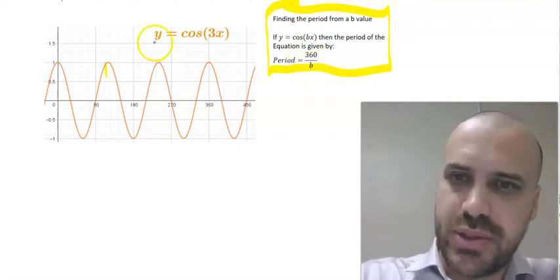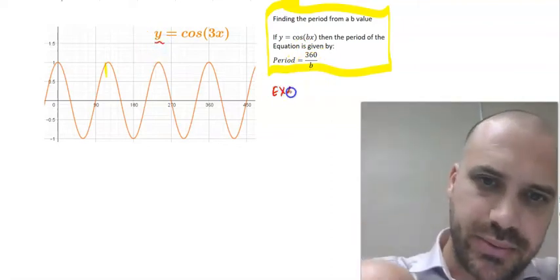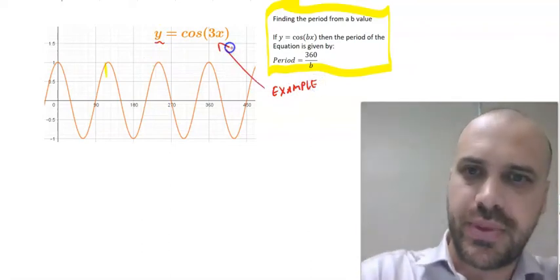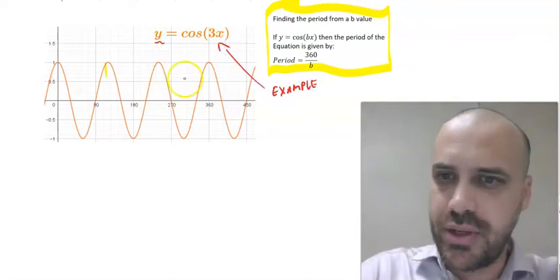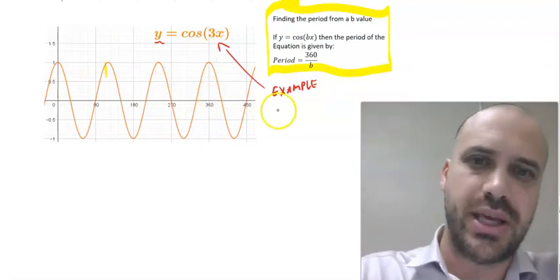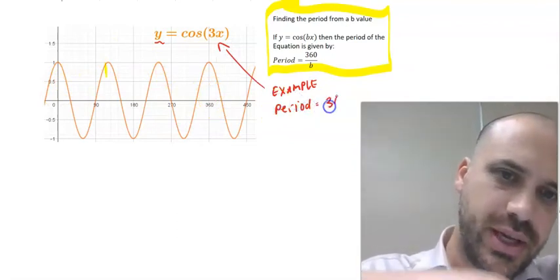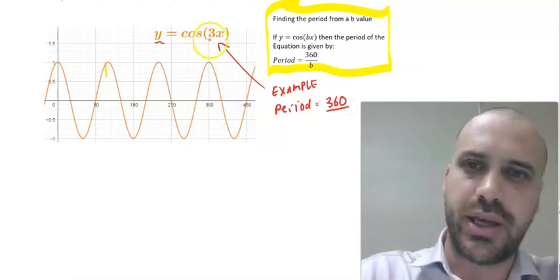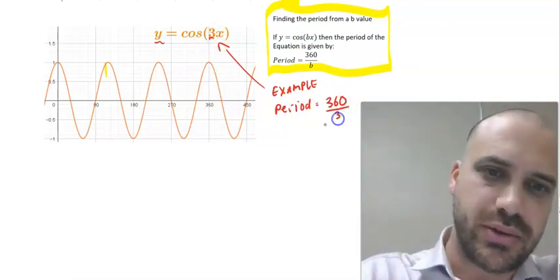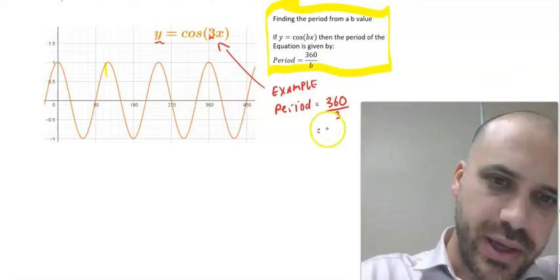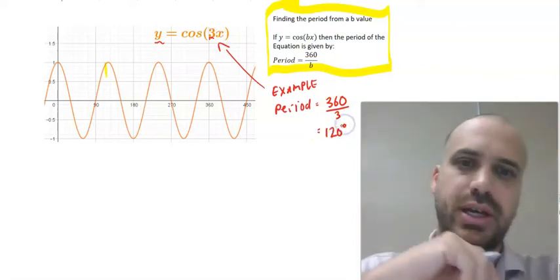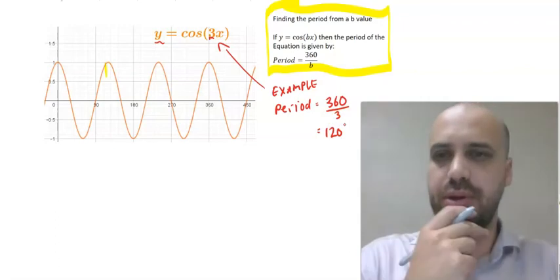So if we use this as our example right there, then we can say that the period of this function is going to be equal to period equals 360 divided by our B value, which is 3. So the period is going to be 120.